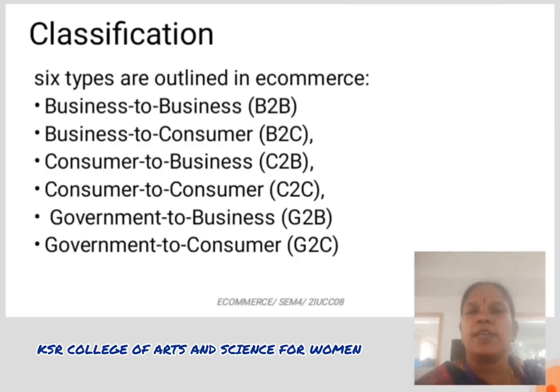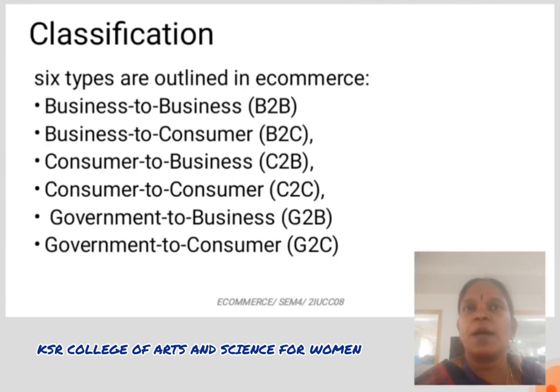Classification: There are 6 types of classification in e-commerce. 1. Business to Business: In the business to business type of electronic commerce system, companies do business with each other.